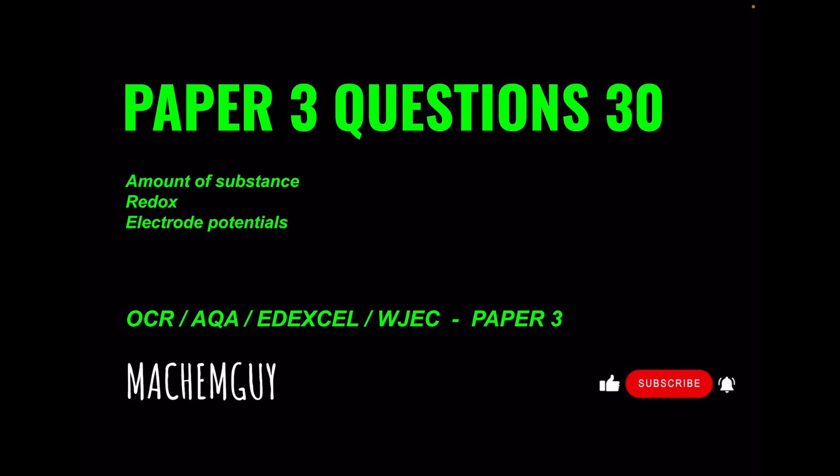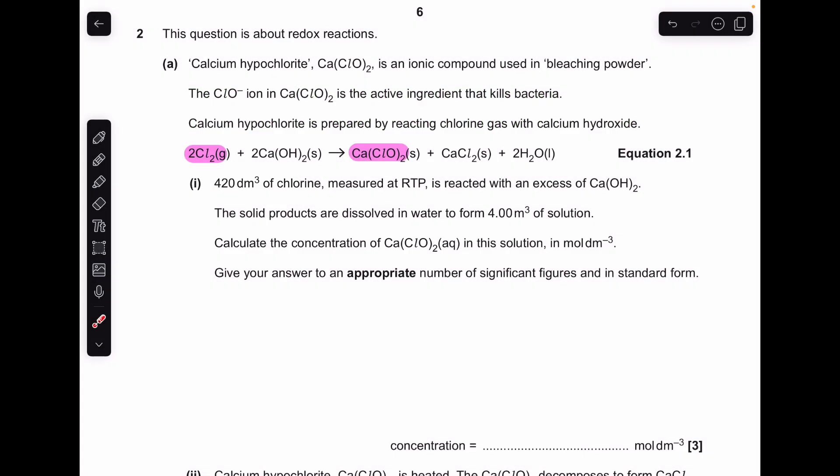For part A we've got to calculate the concentration of the calcium hypochlorite formed from the reaction. We've got the volume of chlorine at RTP so we'll turn that into moles. That's just the volume of chlorine divided by the molar gas volume, so 17.5 moles of chlorine.